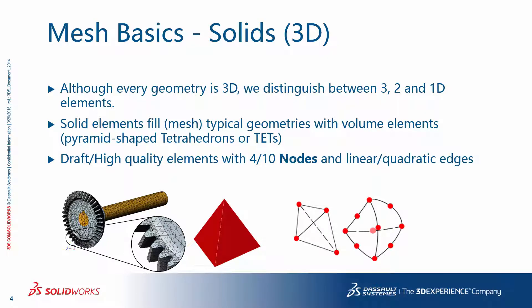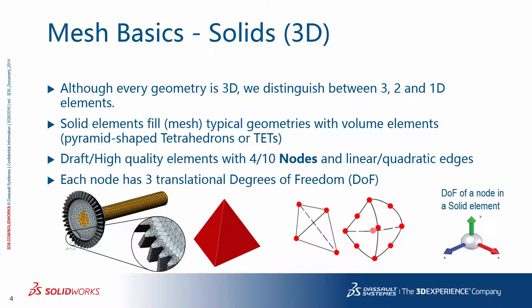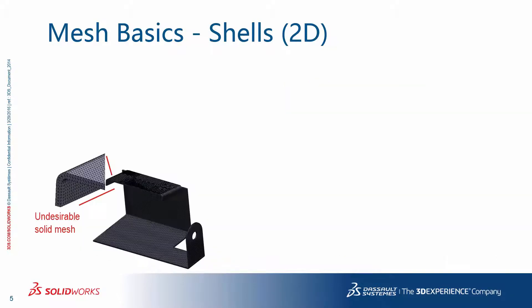In SolidWorks Simulation, there are two types. The so-called draft quality has four corner nodes and linear edges. The high-quality tetrahedral has ten nodes — four in the corners and six on the quadratic edges. Each node in a tet element has three translational degrees of freedom. Using solid elements to mesh thin parts is not efficient; you have to have at least a couple of solid elements in the thickness to model the bending effects. Also, you do not want elements with a bad aspect ratio, because numerically these are inaccurate. So solid elements are not desirable for a thin part.